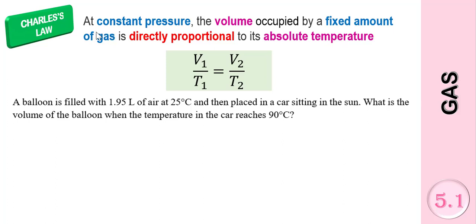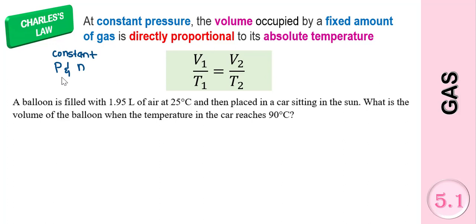Charles' Law states that at constant pressure, the volume occupied by a fixed amount of gas is directly proportional to its absolute temperature. So the constants in Charles' Law are pressure and also the amount of gas.